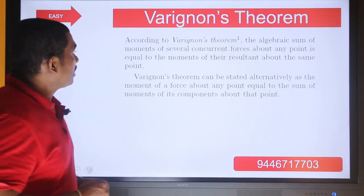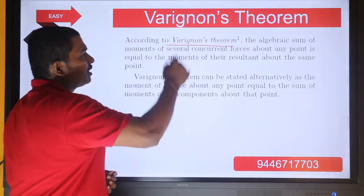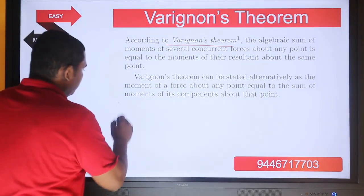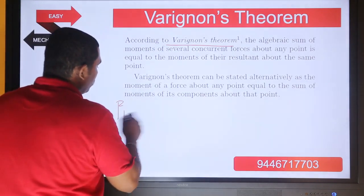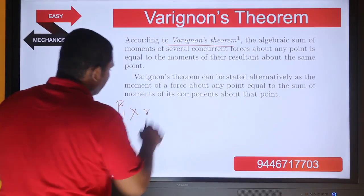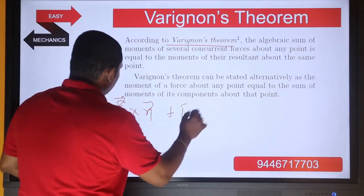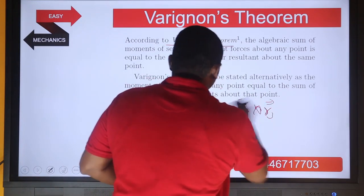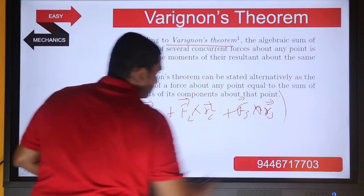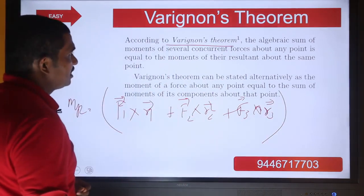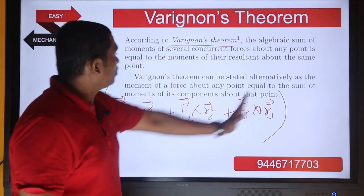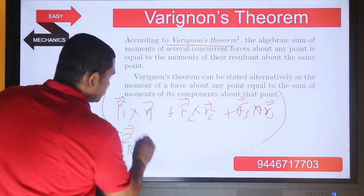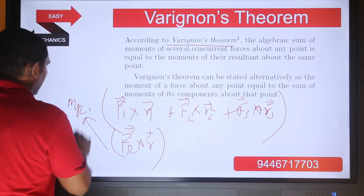We will now look at Varignon's theorem. According to Varignon's theorem, the algebraic sum of moments of several concurrent forces about any point is equal to the moment of the resultant about the same point. So if you have three forces f1, f2, f3, the resultant moment is f1 cross r1 plus f2 cross r2 plus f3 cross r3, and this equals the moment of the resultant force Fr cross r about the same point.